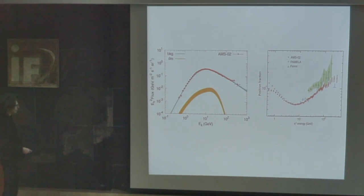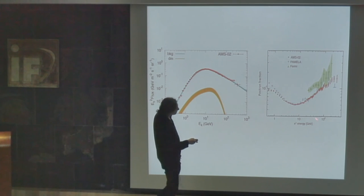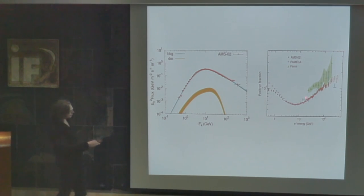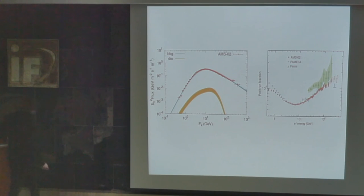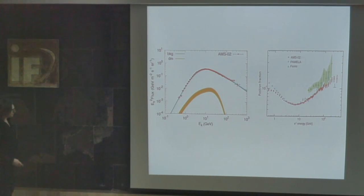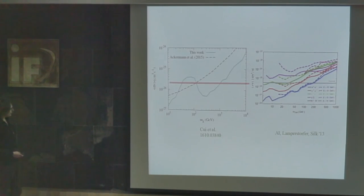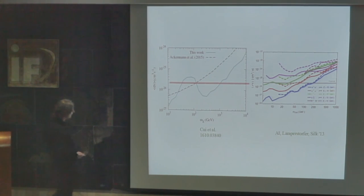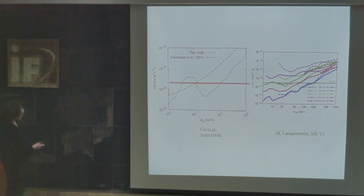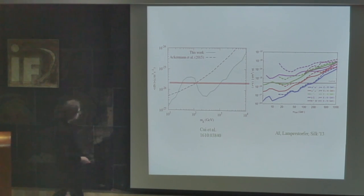For the positron, the situation is more exciting or less clear. From secondary production you expect a positron fraction which is monotonically decreasing. Instead you observe a rise in the positron fraction. This can be explained using dark matter annihilations or decays, but this explanation seems to be in tension with gamma ray observations and some theoretical considerations. One can use this data to set limits on dark matter properties. For anti-protons, you can probe dark matter particles with masses below 1 TeV if they annihilate producing hadrons. For dark matter annihilating into leptons like e+e-, you can set stronger limits on the cross-section from observations of the positron fraction.